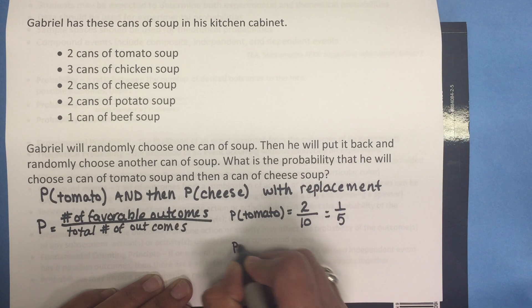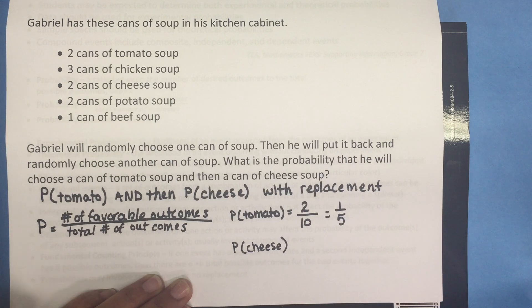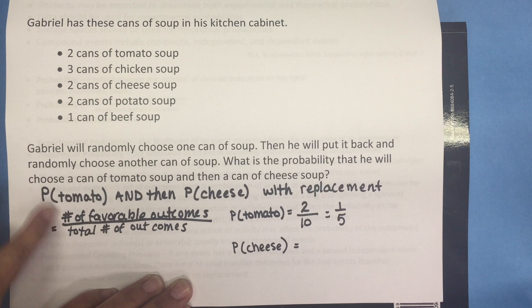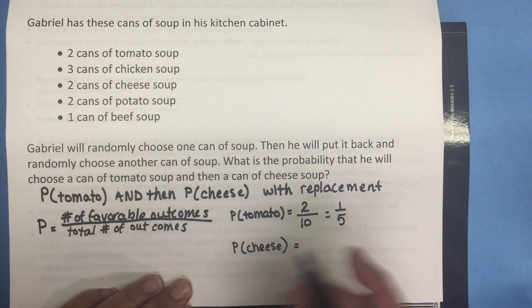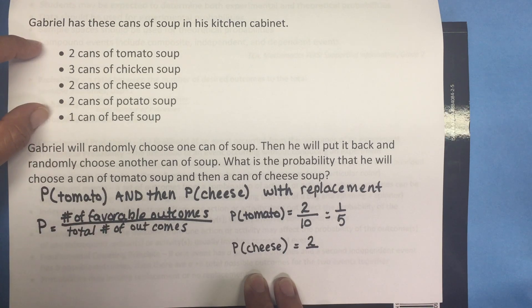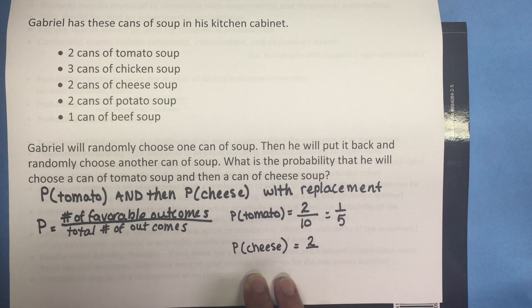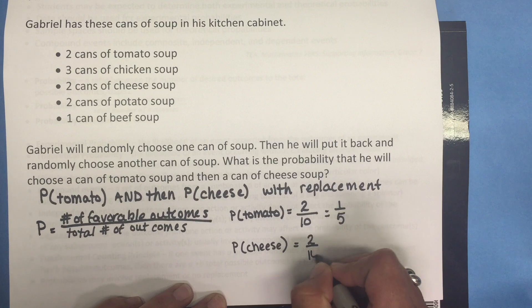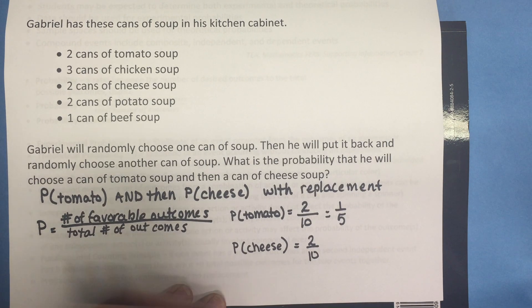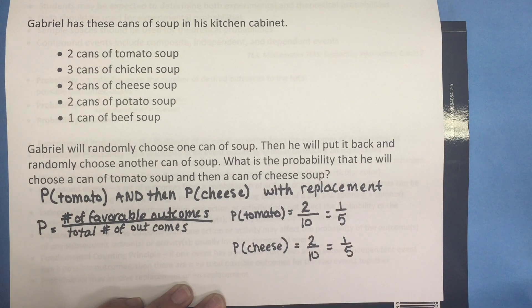Now let's find the probability of cheese soup. The number of favorable outcomes — the total number of cans of cheese soup — is two. Since he put the first can back, there are still a total of ten cans. So the probability of cheese soup is two-tenths, which simplifies to one-fifth.